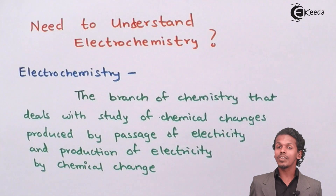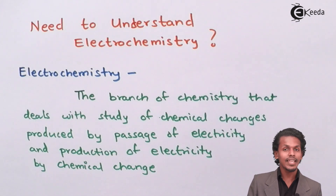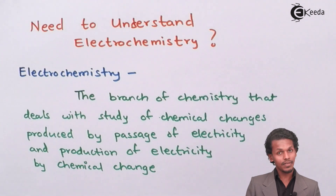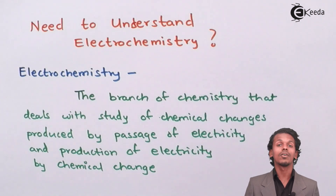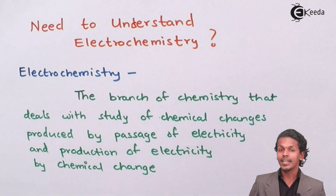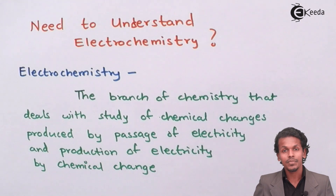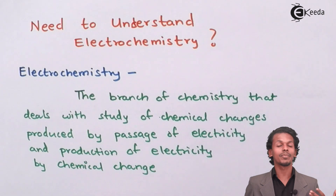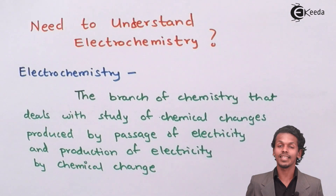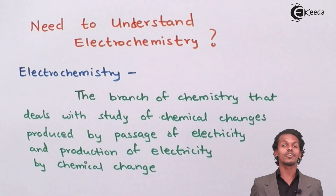The first is a reaction in which electricity is being involved so as to complete a given reaction, and the second is a reaction in which chemicals react to give a particular amount of electricity. So this kind of study — in which chemical changes bring about electricity, or electrical change brings about chemical change — is known as electrochemistry.